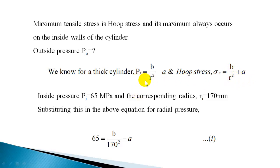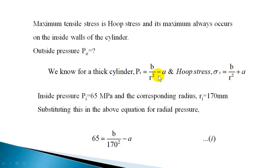We know one pressure value — the inside pressure — and also the inside hoop stress, both at R equal to Ri. So at the inside radius corresponding to those conditions, we know both the pressure and the hoop stress, giving us one equation each. Using the pressure equation when R equals Ri = 170 mm, we know the pressure is 65 MPa, so: 65 = B/170² − A. And when maximum hoop stress is 82 MPa at R = 170 mm: 82 = B/170² + A.